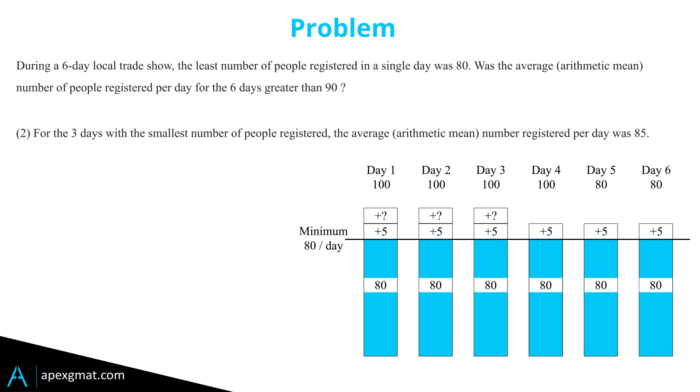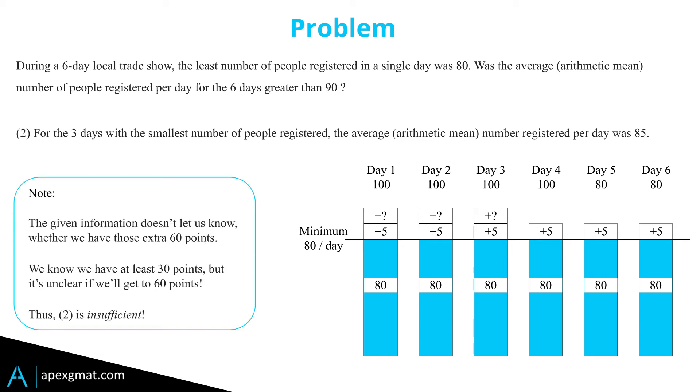Statement two gives us opposite information—it talks about the minimum. In aggregate, that doesn't let us know directly whether or not we make those 60 points. It's possible, but it's also possible that we don't, because we're dealing with a minimum rather than a maximum. We're dealing with information that can lie on either side of what we need. Therefore, two is insufficient.